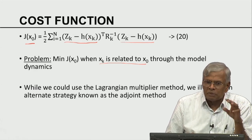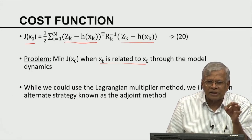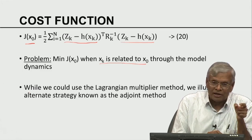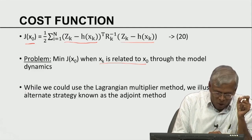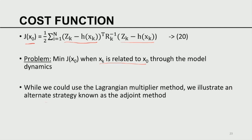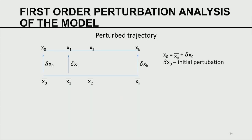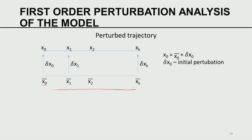In the non-linear case, we illustrate an alternate strategy called the adjoint method rather than the Lagrangian multiplier method. I distinguish between the adjoint equation and the adjoint method: the adjoint method is a class of algebraic methods for computing the gradient explicitly and elegantly. First order perturbation analysis of the model is key to this adjoint method. Let x̄₀ be a base initial state — from that we generate a base trajectory.